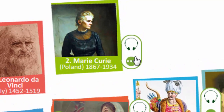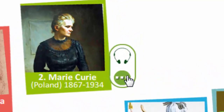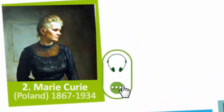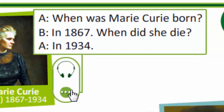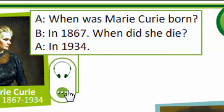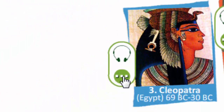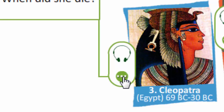When was Marie Curie born? In 1867. When did she die? In 1934. When was Cleopatra born? In 69 BC. When did she die? In 30 BC.